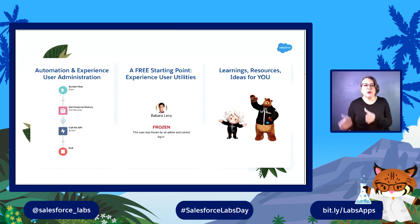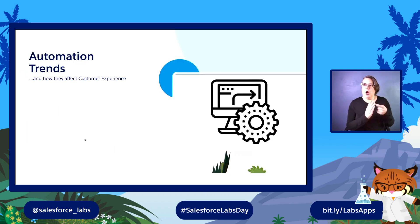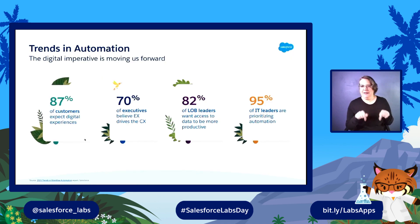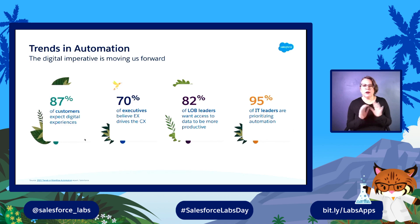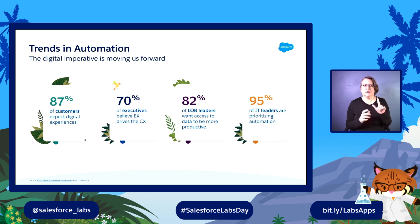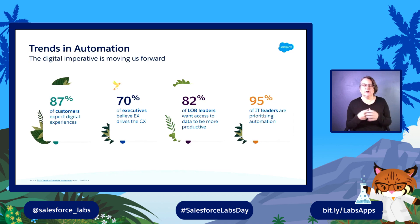Let's talk about trends in automation. You heard the folks at the beginning of the session cover these, but it makes sense to reiterate a couple of them and relate them to the world that we live in with Experience Cloud. You saw that the digital imperative is moving everyone forward. Everyone wants automation. We want to make things easier and faster and simpler for customers and employees.